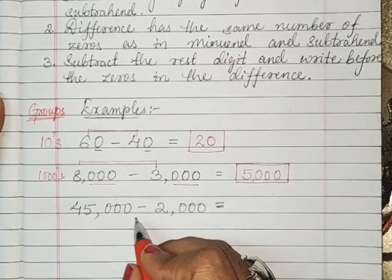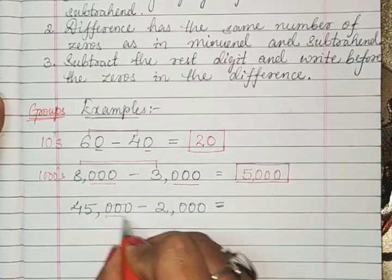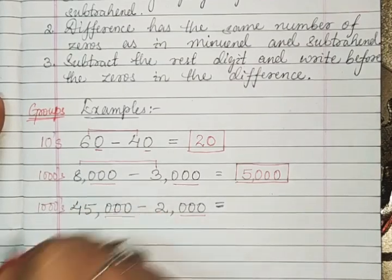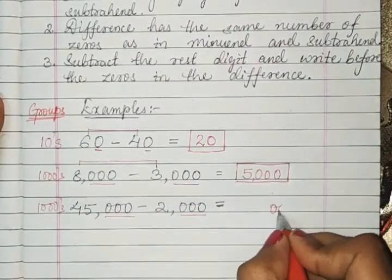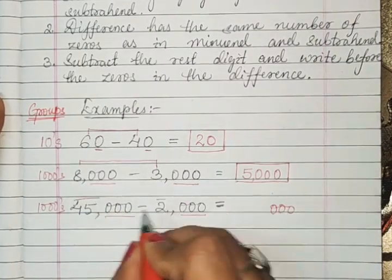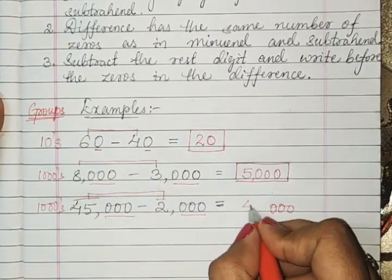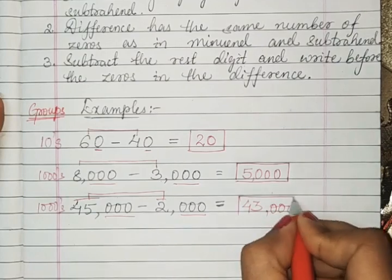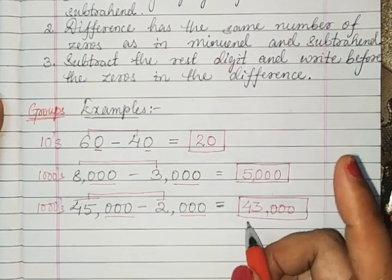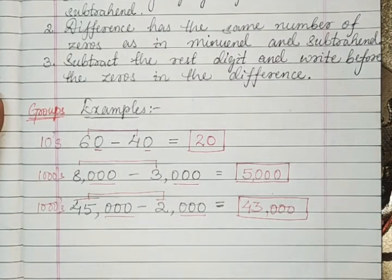Example three: 45,000 minus 2,000. Find the group — there are three zeros, so it is the thousands group. Write three zeros in the difference. The rest is 45 minus 2, which is 43. So the difference is 43,000. By following these three steps, you can subtract orally. Thank you, children.